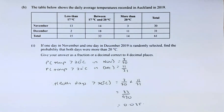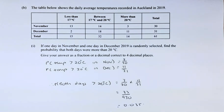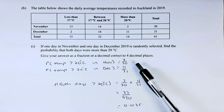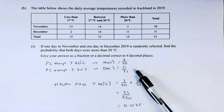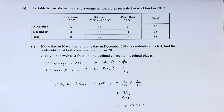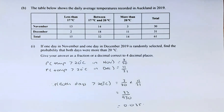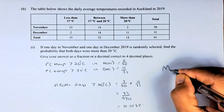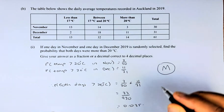The probability that both days were more than 20 degrees — you are going to multiply: 3/30 times 11/31. The answer is 33 over 930, which equals 0.0355. That will give you a merit in this paper.